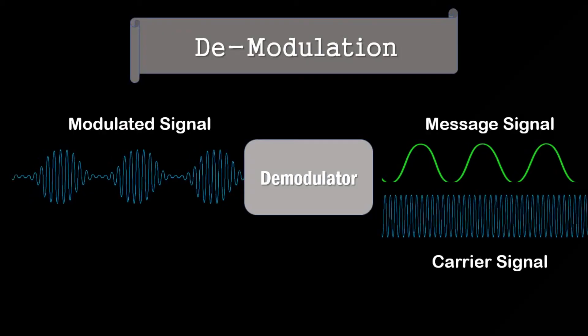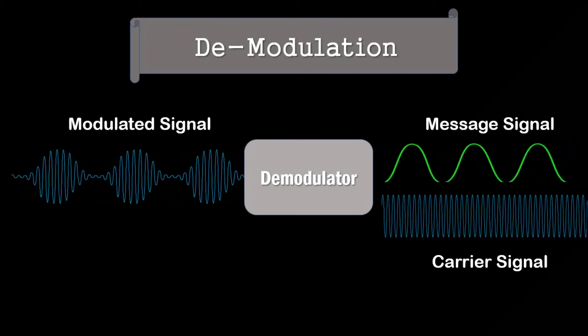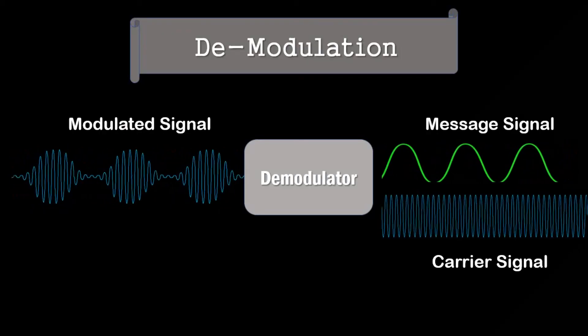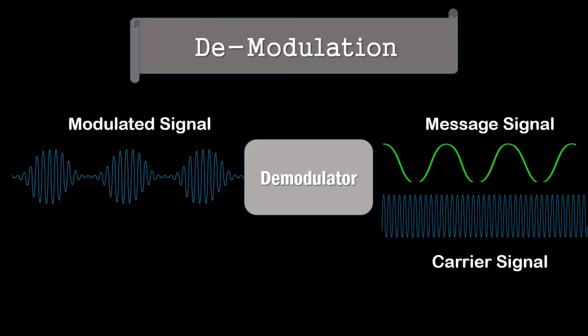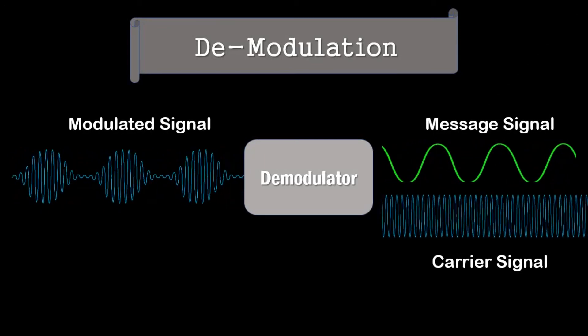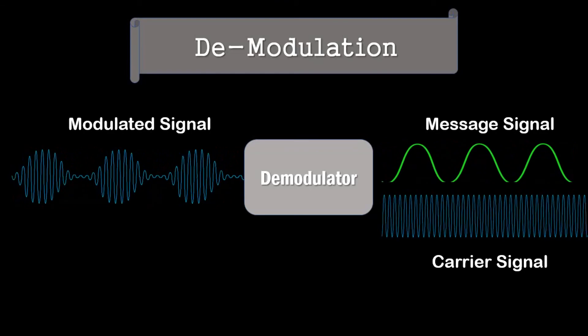When the modulated signal reaches the receiver, it is necessary to separate the message signal from the carrier signal. This process of recovering the message signal is called demodulation.